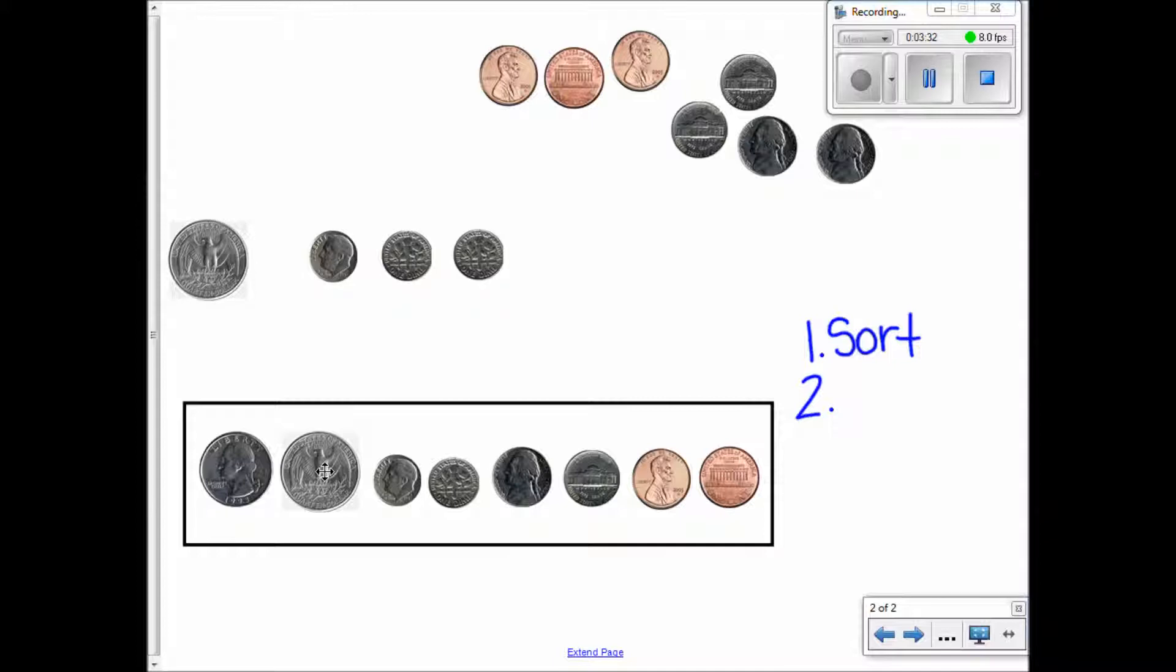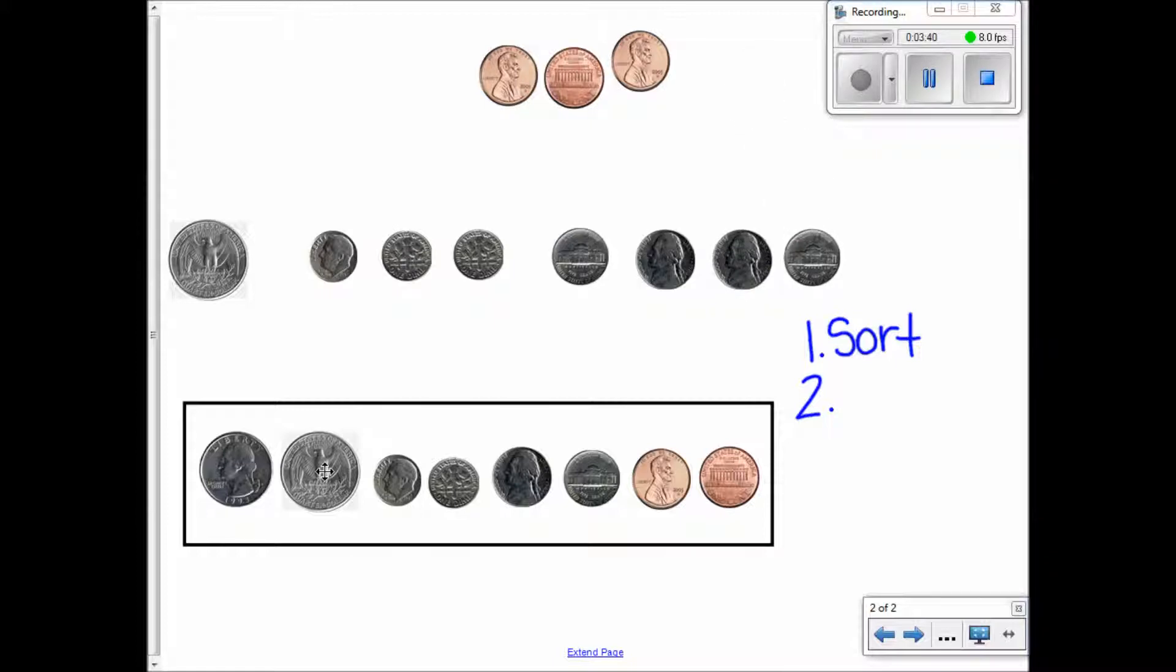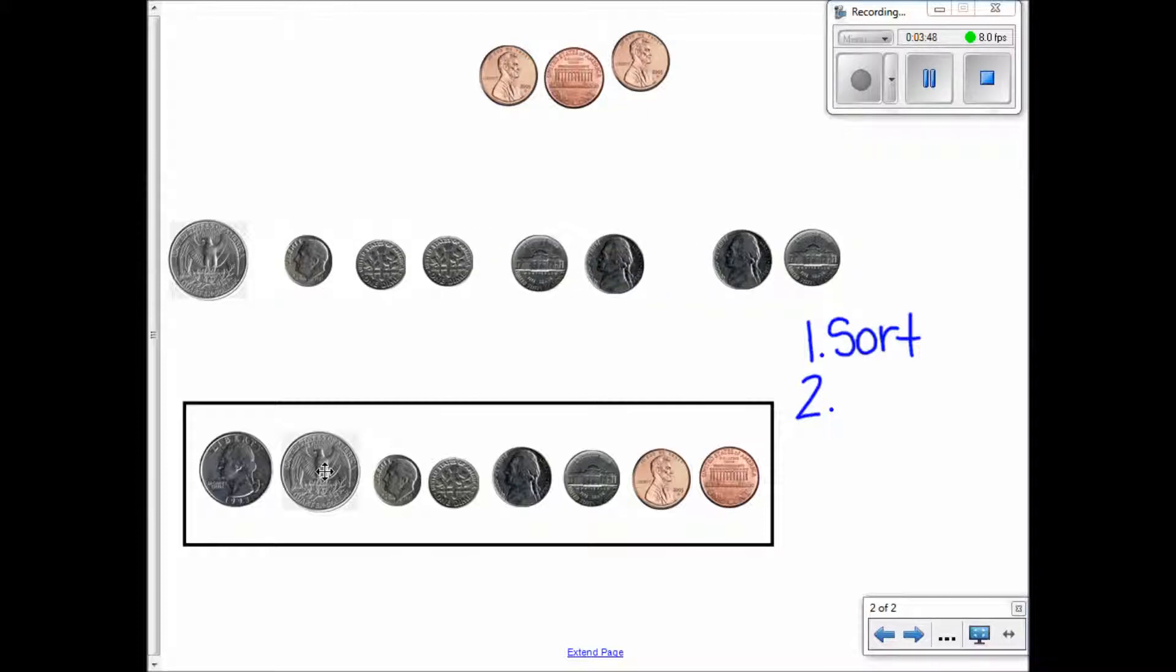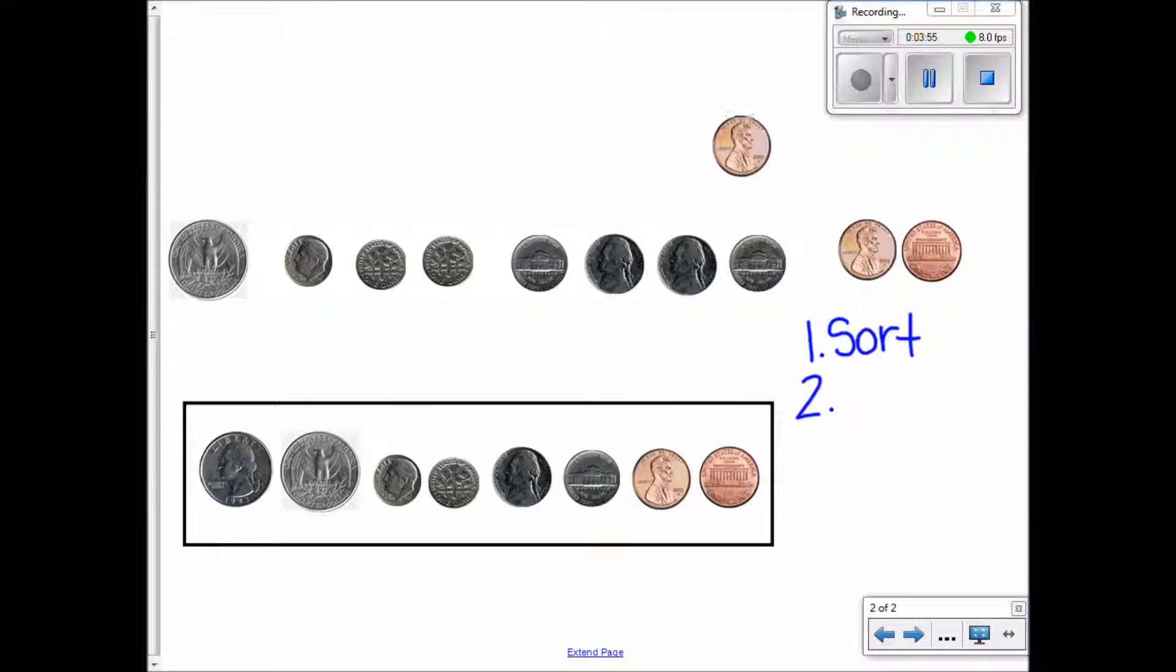What's the value of this nickel? Five cents. Absolutely. Then my coin with the least value is the penny. What is the value of a penny? One cent. So then I'm going to put my pennies down here at the end. So I sorted, and then I put them in order from greatest to least.